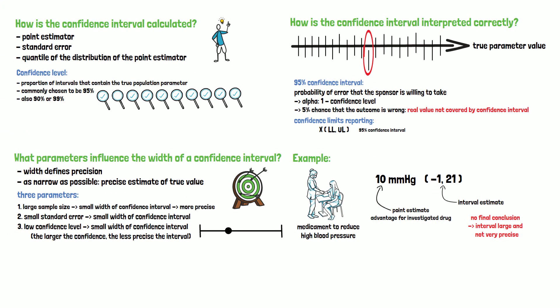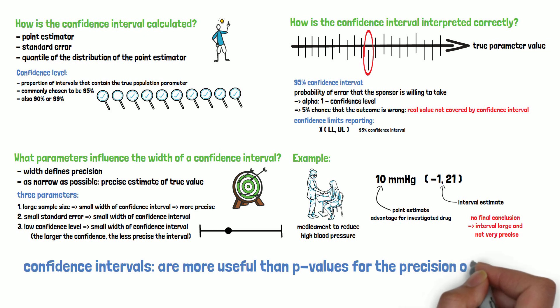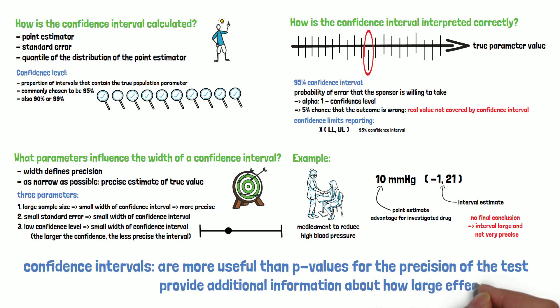So that is it for today. As you can see, when it is about the precision of a test result, confidence intervals are a more useful measure than p-values, which only reflect the statistical significance. Confidence intervals provide additional information about how large the effect could be, so answering the question how the clinical relevance for the finding is.